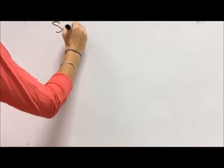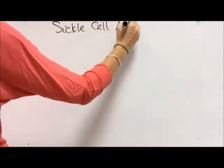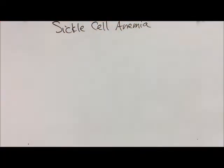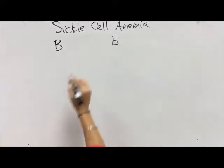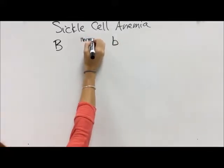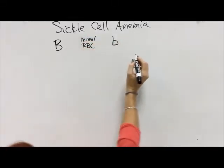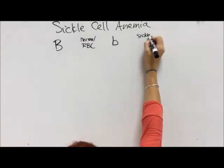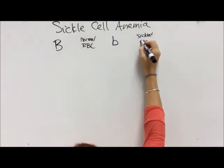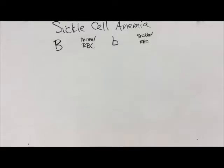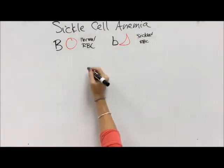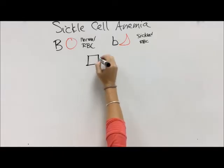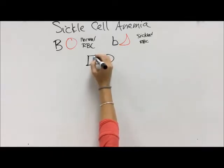The first trait we're going to look at is sickle cell anemia. It's a very common trait in certain parts of the world, particularly in Africa, because sickle cell blood cells protect people against malaria. The dominant trait is a normal red blood cell and the recessive trait is a sickled red blood cell. Normal red blood cells are like happy squishy inner tubes; sickle blood cells are like crunchy croissants and don't carry oxygen very well.